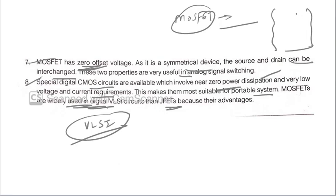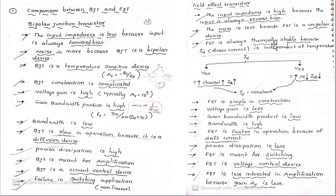Last question: This is a comparison between BJT and FET. This is very important as ISRO or any other competitive exam point of view. All the theoretical questions can be covered by these. First, BJT: The input impedance is low and input is always forward biased. The noise is more, but BJT is a bipolar device. Here, noise is more. BJT is temperature sensitive, but MOSFET is not temperature sensitive. I have already told you it is thermally stable. BJT construction is complicated. Voltage gain is high. Gain bandwidth product is here high. But in the case of MOSFET, it is low. Bandwidth is low here. BJT is slow in operation because it is a diffusion device. That is why they cannot be used as a switching device.